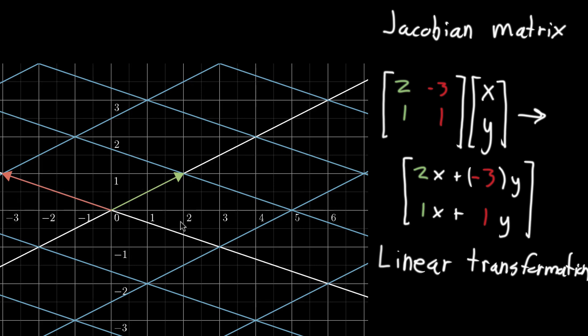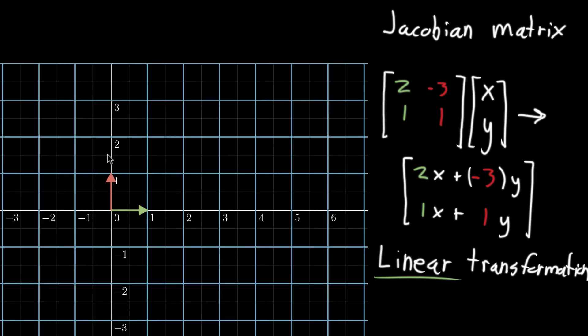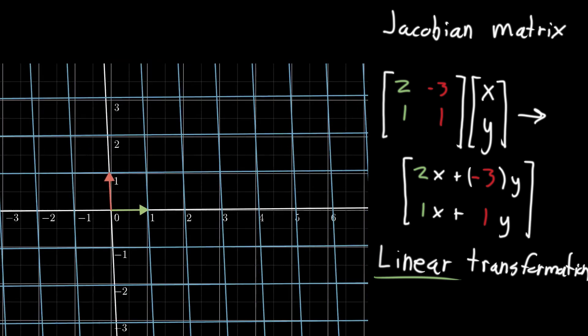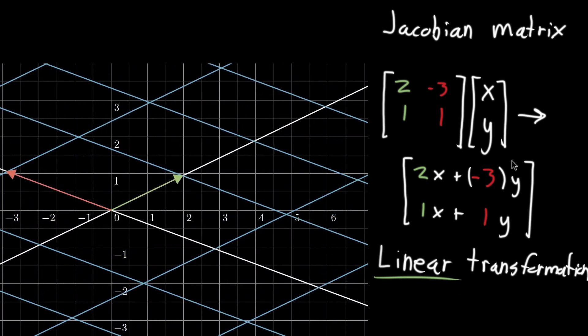There are a couple important things to note. First of all, all of the grid lines remain parallel and evenly spaced. And they're still lines—they didn't get curved in some way. That's very special. That is the geometric way that you can think about this idea of a linear transformation. I like to think about it that lines stay lines. In particular, the grid lines here, the ones that started off vertical and horizontal, they still remain parallel and they still remain evenly spaced.